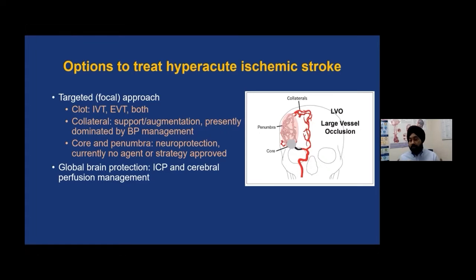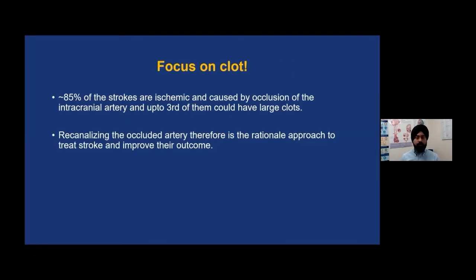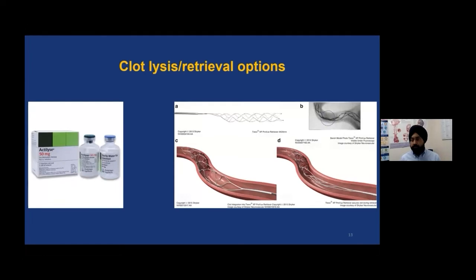If someone has ischemic stroke with occlusion in a major artery — a large vessel occlusion — it makes sense to open that artery to salvage the brain. We have two strategies: the time-honored approach using clot-busting medication, intravenous thrombolysis, and the mechanical approach where small catheters are used to go up into the brain and pull out the clot — endovascular thrombectomy, shown on the right side.